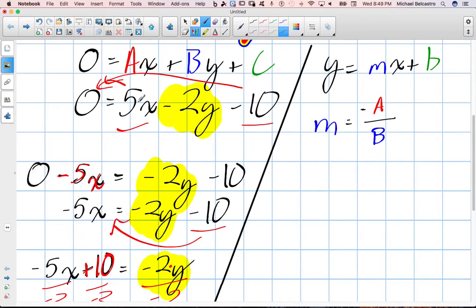Well, our a value was 5, and our b value was negative 2. So I could say m is equal to negative a was 5 over, and our b value was negative 2, negative 2. Well, negative 5 divided by negative 2, that is equal to 5 over 2. And then, lo and behold, I already have my slope.